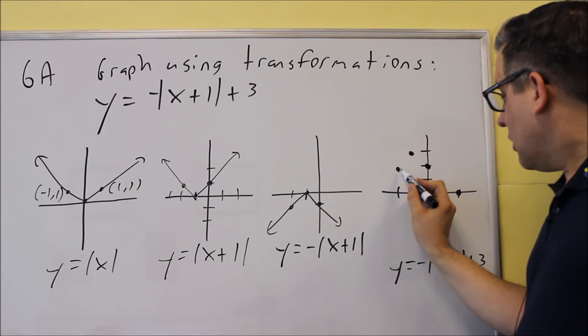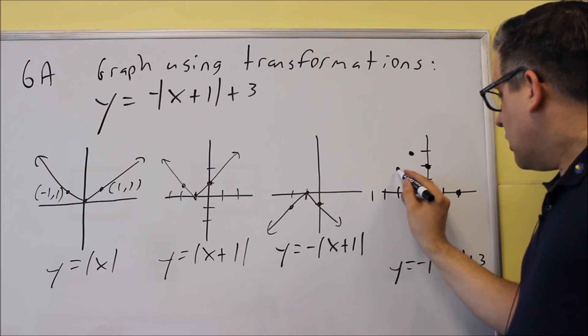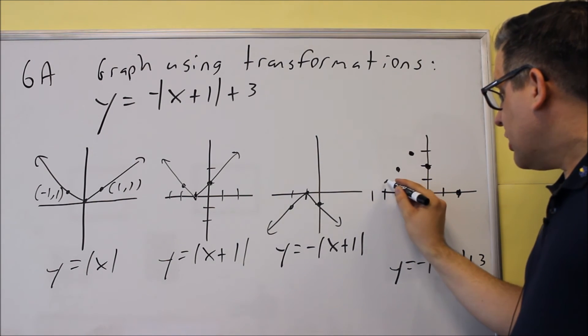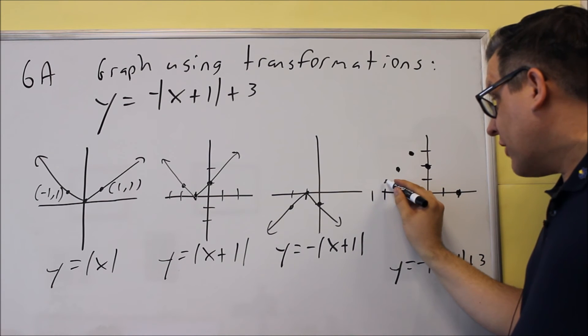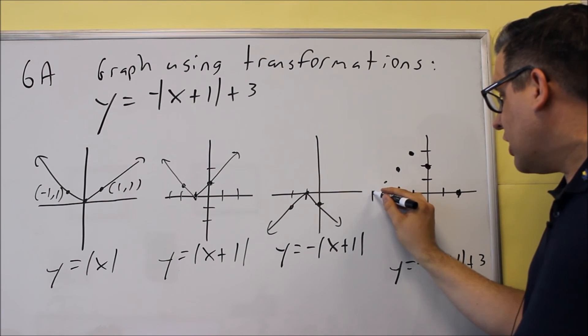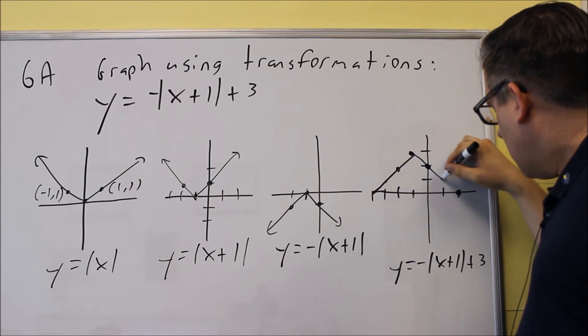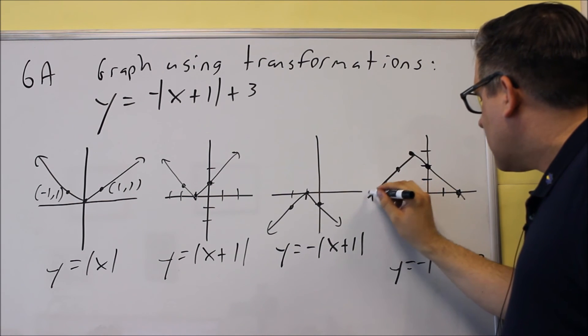Likewise, you can do the same thing over there. You can go down 1, 1 to the left. And then down 1, 1 to the left again. And so now you end up getting this v-shaped graph that's here.